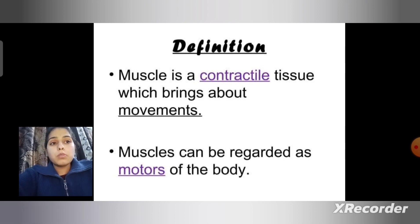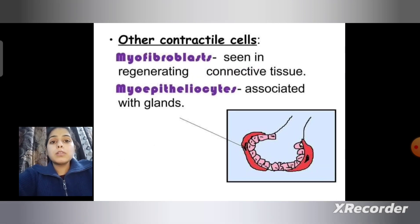Muscle is a contractile tissue which brings about movements and muscles can be regarded as motor of the body. There are also contractile cells other than muscle cells, which includes myofibroblast, which is seen in regenerating connective tissue.